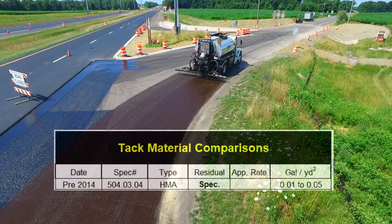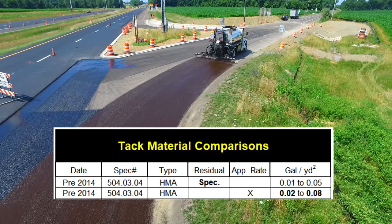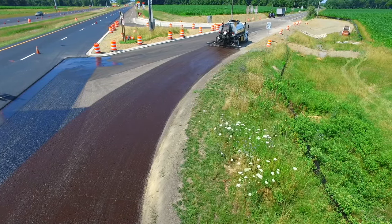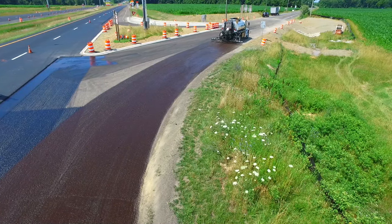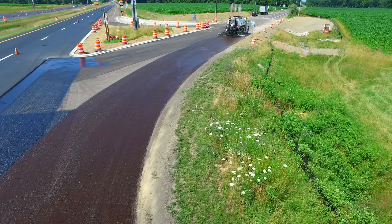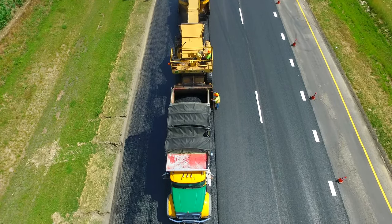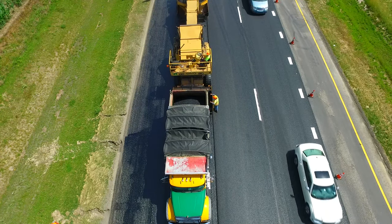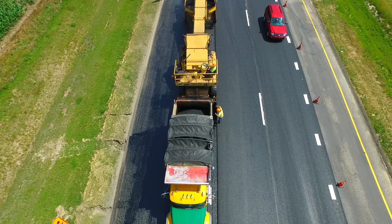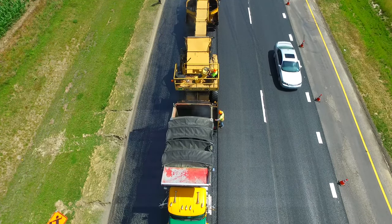The rate being applied by this distributor is 0.05 gallons per square yard and would have met the specifications. Note the color of the freshly applied TAC — it is brown compared to black TAC that has broken, meaning the asphalt portion has separated from the water and emulsifiers, and has set, meaning the water and emulsifiers have completely evaporated. Once set, the TAC is less sticky and should not adhere to the tires of the paver.